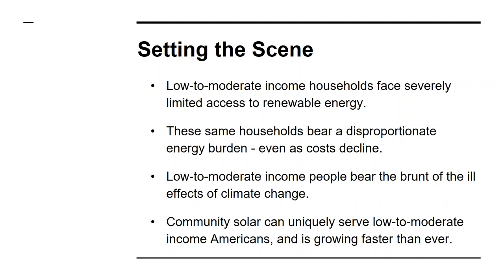Third, low to moderate income people bear the brunt of the ill effects of climate change, producing disproportionate health impacts. Race and income are closely correlated with the proximity of one's home to a coal plant, and Latinx or Black Americans are more likely to experience asthma than white Americans. However, community solar can potentially help solve some of these problems. NREL has reported that up to half of solar deployment by 2020 will come in the form of community solar.